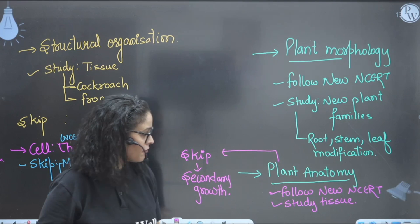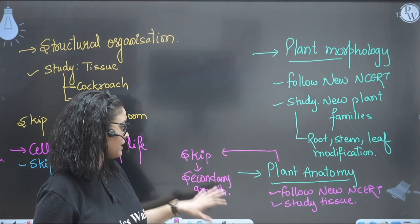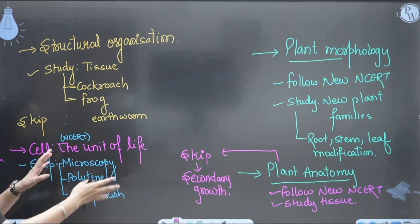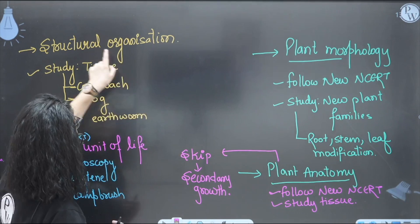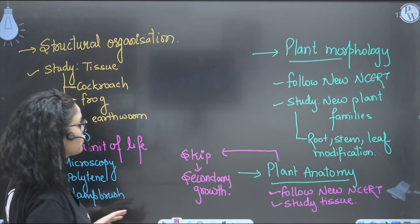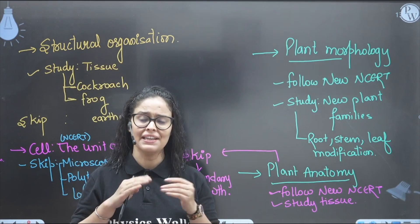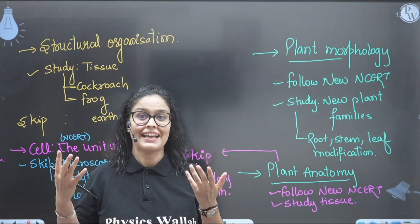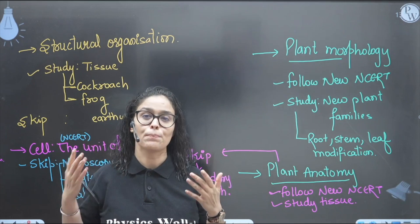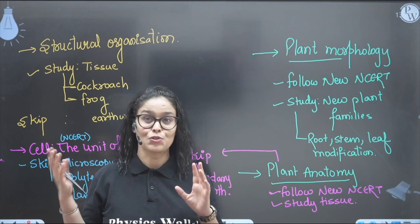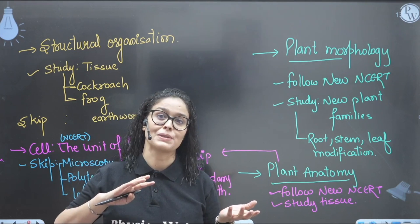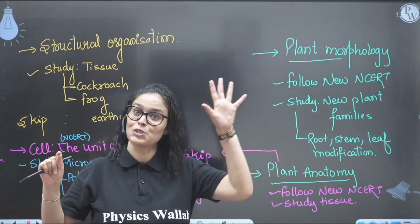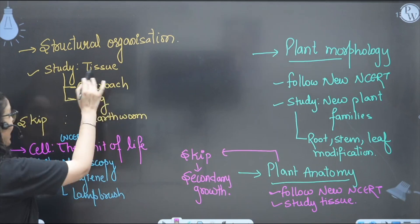For plant anatomy, follow new NCERT and study tissue. You can skip secondary growth because it has been deleted from the new NCERT and is not important for the exam. For structural organization, the new NCERT has not given tissues in an elaborative way, but you have to study tissues because the concept is very important for human physiology - you will find a lot of animal tissue concepts there.